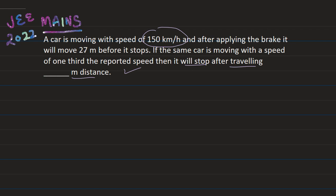After braking, the car moves a distance of 27 meters. Simply use the equation v² - u² = 2as.